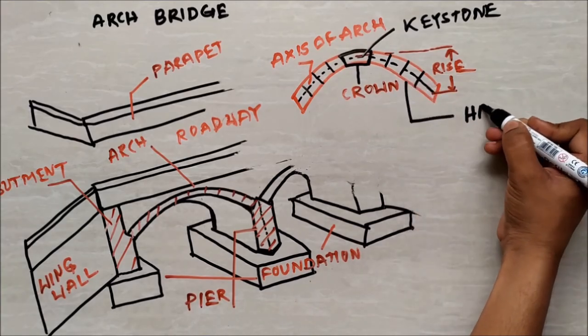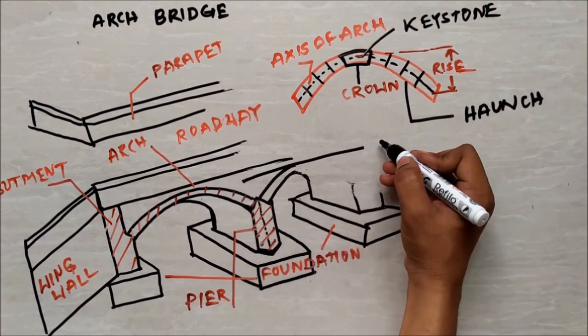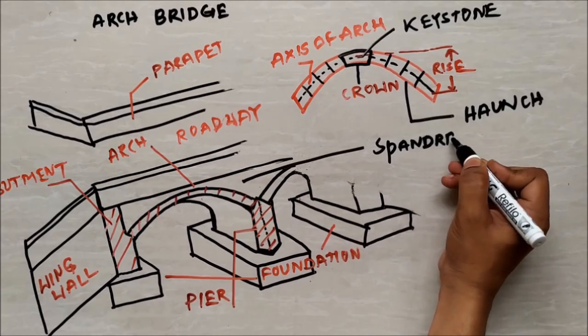Each side of crown of an arch is called as haunch. This is the spandrel wall, which is the space between two arches.